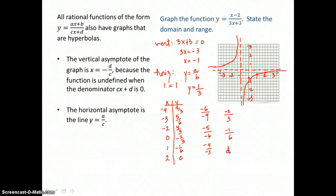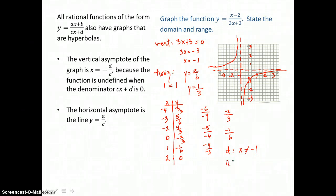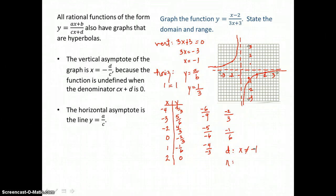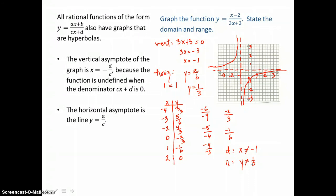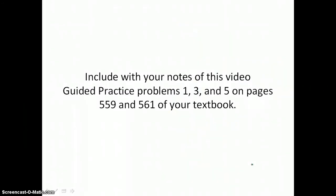For domain and range: the domain is all x not equal to negative 1, because that's where the vertical asymptote is, and x equal to negative 1 would give a denominator of 0. The range is all y not equal to 1 third, because that's where the horizontal asymptote is and we'll never get a y value of 1 third for this function. Include with your notes guided practice problems 1, 3, and 5 on pages 559 and 561 of your textbook.